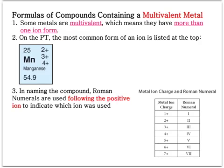Here's an example. If you look at the periodic table and find manganese, manganese has three possible ion charges — the most common one is usually listed at the top. How we're going to differentiate which metals are multivalent and which are regular metals with only one ion charge is that when naming them, they are going to include a Roman numeral.